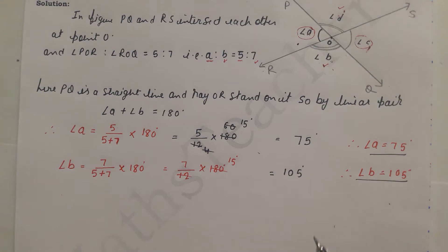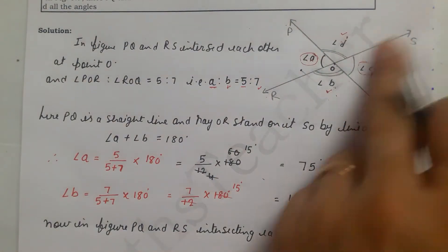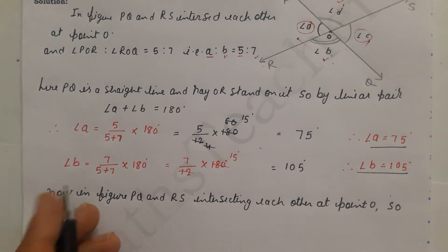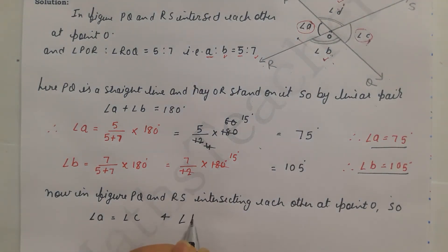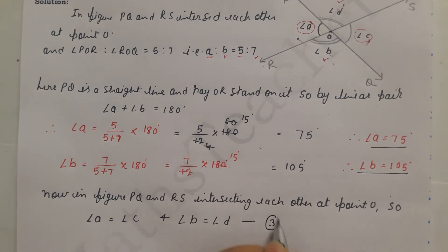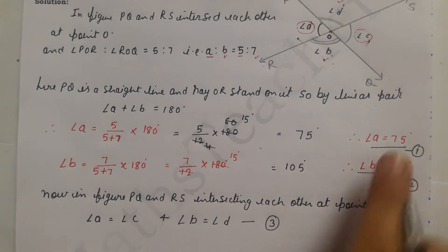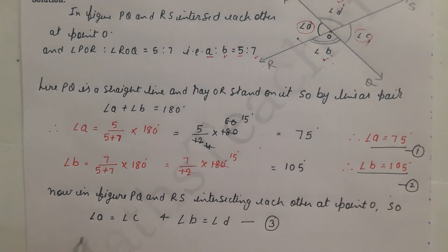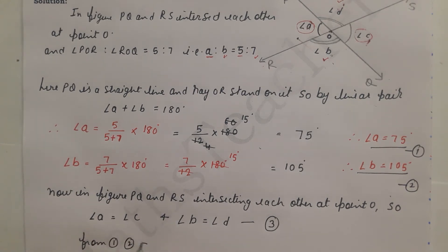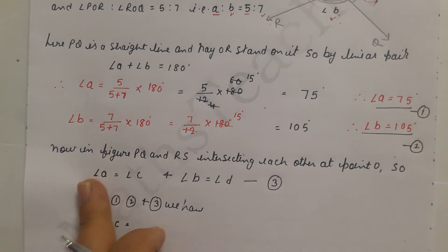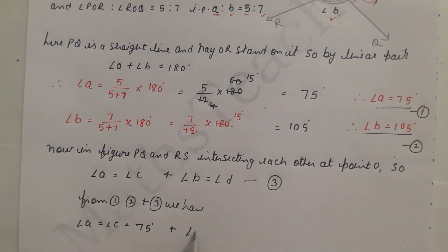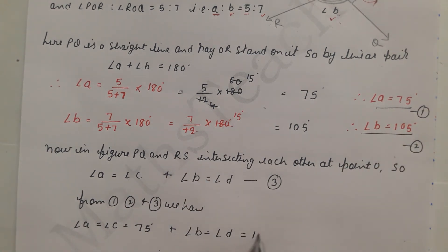When two lines intersect, we use two theorems: vertically opposite angles and linear pair. In the figure, PQ and RS intersect at point O. By the vertically opposite angle theorem, angle A equals angle C, and angle B equals angle D. Therefore angle C equals 75 degrees and angle D equals 105 degrees.